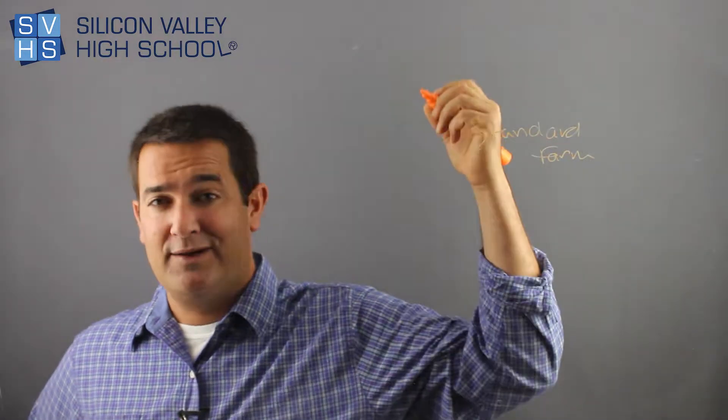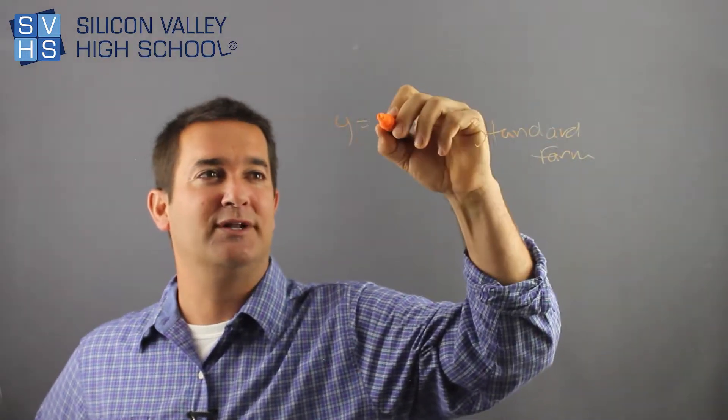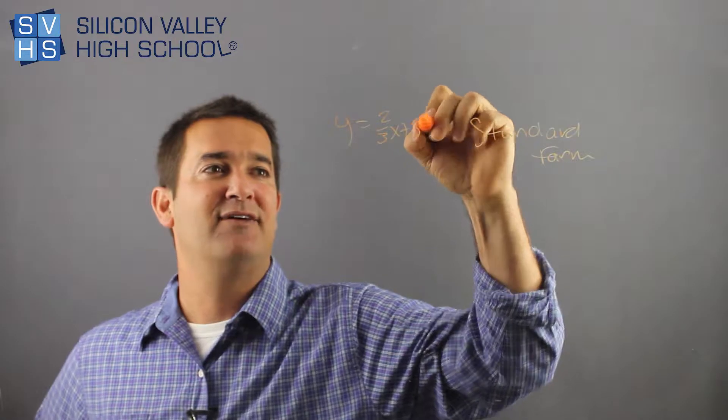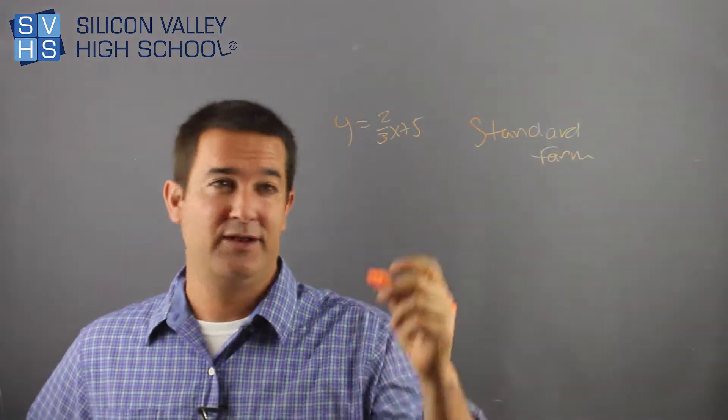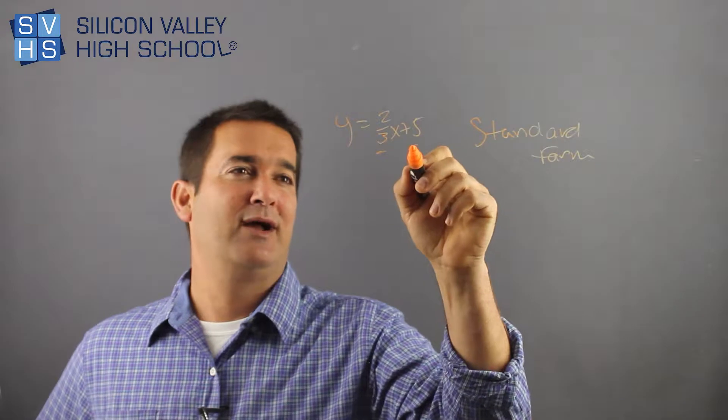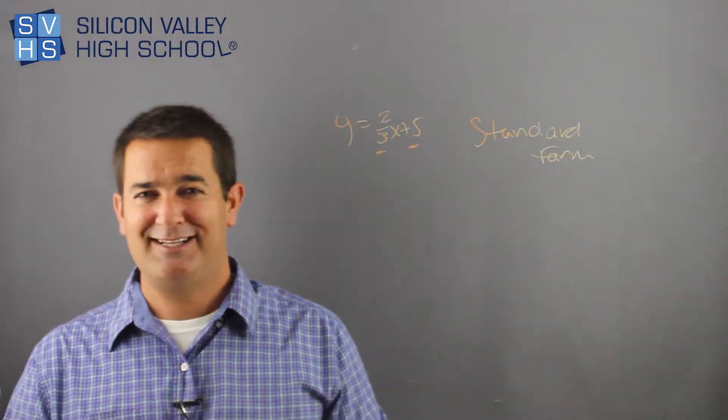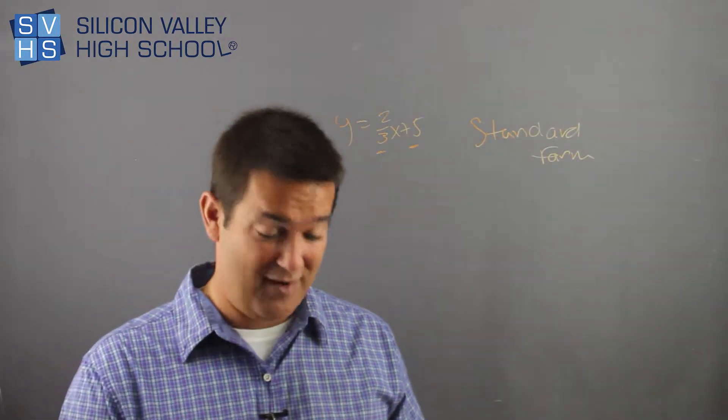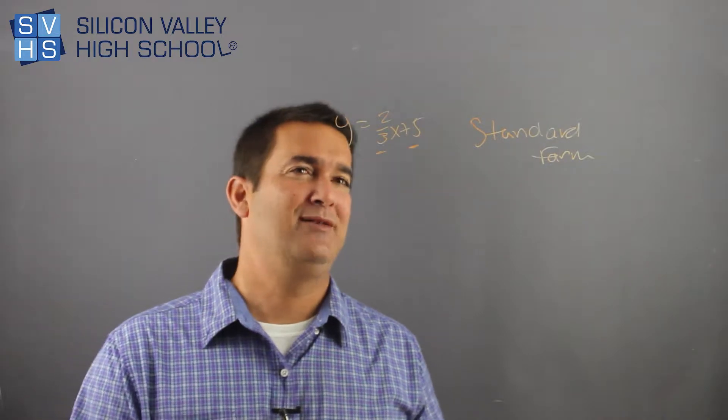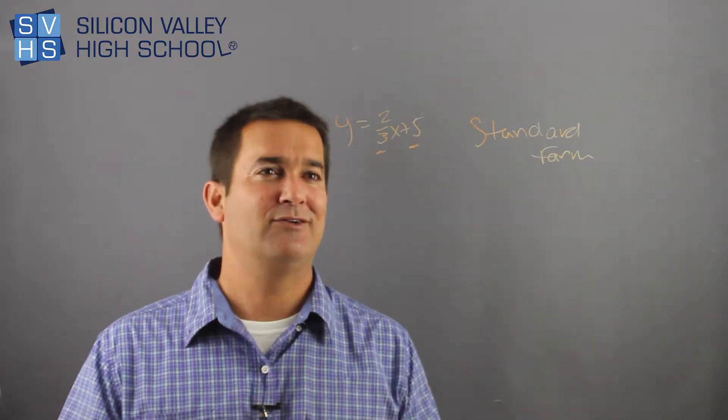You're probably familiar with y equals mx plus b, like y equals two-thirds x plus five. That's the equation of a line where the slope is two-thirds and the y-intercept is five. But what is standard form?